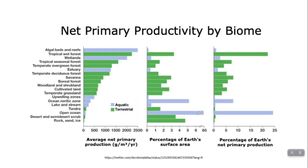You can look at different biomes and see differences in net primary productivity. This graph on the left is measured in grams per meter squared per year — grams as a measure of biomass, which is indirectly how much glucose is being produced. The most productive ecosystems per unit area per year are algal beds and coral reefs. The most productive terrestrial ecosystem is tropical rainforest, which gets the most direct sunlight, the largest amounts of sunlight, and constant sunlight throughout the year.